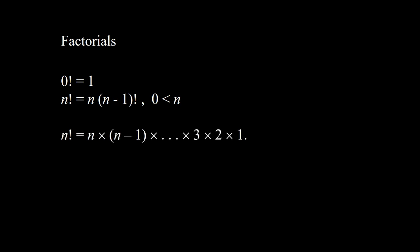First we recall the operation factorials. 0 factorial is 1, and n factorial is n times n minus 1 factorial, where 0 is less than n. In other words, n factorial is n times n minus 1 times and so on times 3 times 2 times 1.